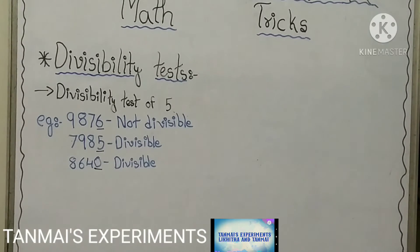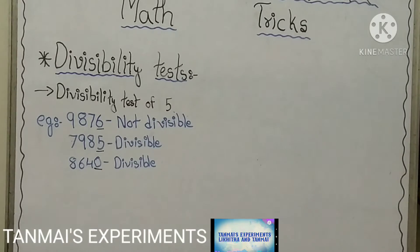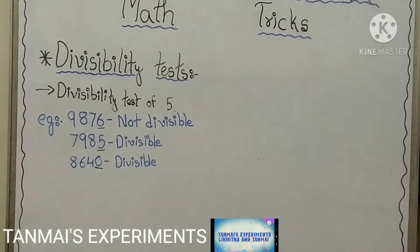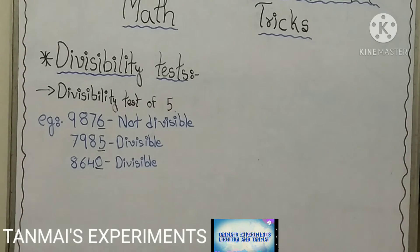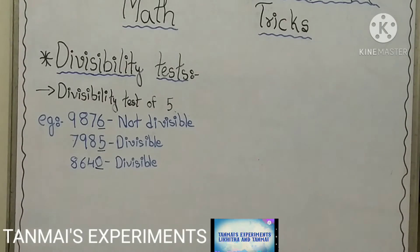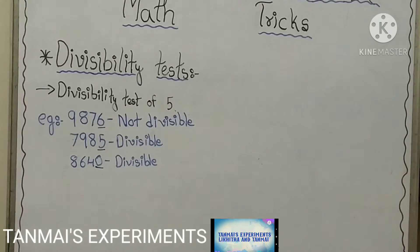The divisibility test of 5 is very easy. In the given number, if the last digit is 5 or 0, then the entire number will be divisible by 5. For example, 9,876 is not divisible by 5 because the last digit is 6, which is neither 5 nor 0. The number 7,985 is divisible by 5 because the last digit is 5. And 8,640 is also divisible by 5 because the last digit is 0.